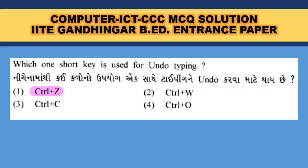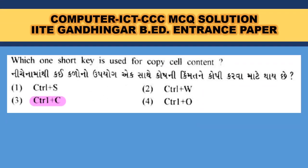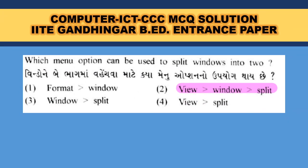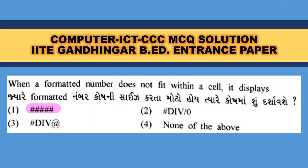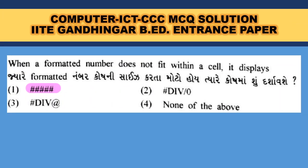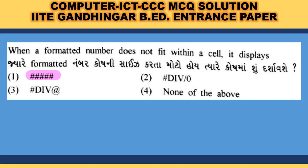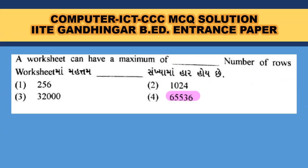Which shortcut key is used for Undo? That is Ctrl + Z. Which shortcut key is used for copying cell content? Ctrl + C. Which menu option can be used to split a window into two? View → Window → Split. When a formatted number does not fit within a cell, it displays #### (hash symbols).